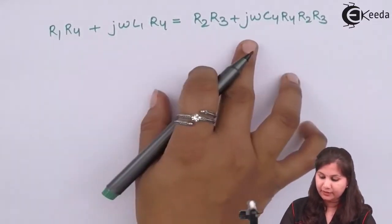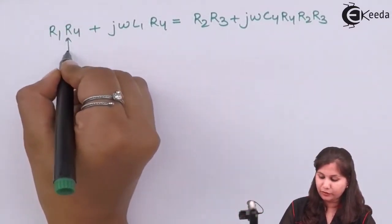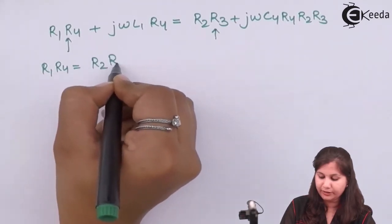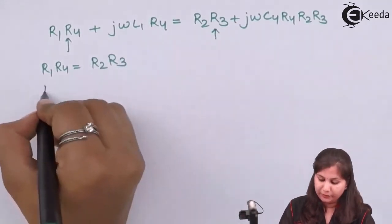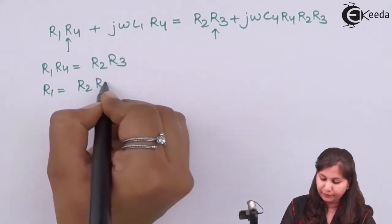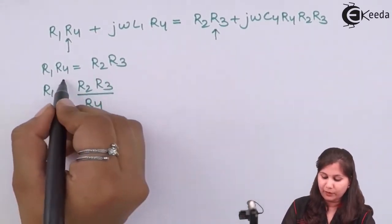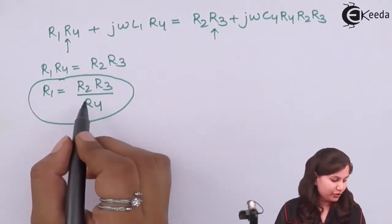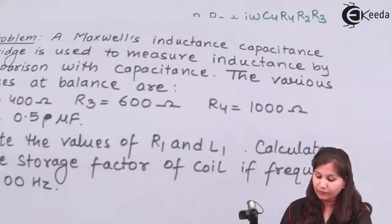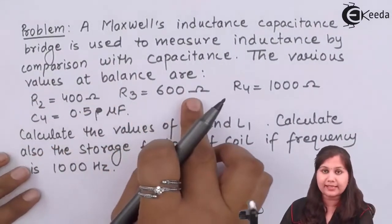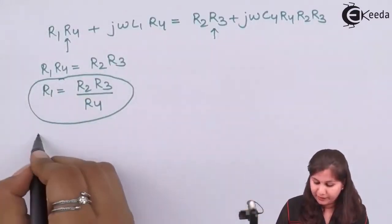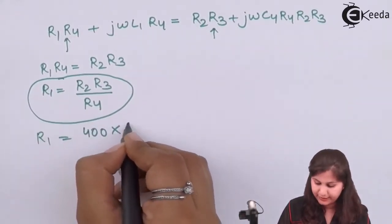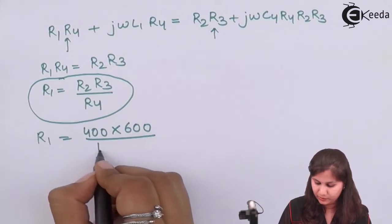Equating the real parts: R1·R4 = R2·R3, so R1 = R2·R3/R4. Putting in the given values — R2 = 400 Ω, R3 = 600 Ω, R4 = 1000 Ω — we get R1 = (400 × 600)/1000 = 240 Ω.